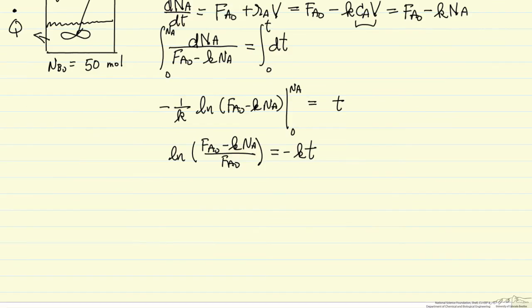Now what I want to solve for is K times Na, because that term, the rate of reaction is going to appear in the energy balance, and we need the energy balance to determine the rate of heat transfer. So I'm going to take the exponential of both sides of this equation.